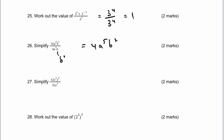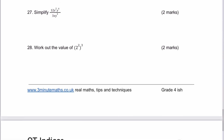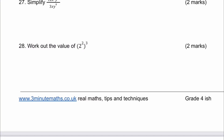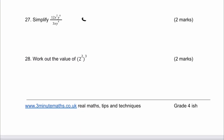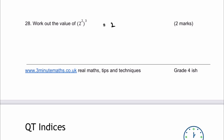Number 27: divide through by 3, so 12 divided by 3 equals 4. Then X to the 2 divided by X to the 1 is X. Y to the 6 divided by Y to the 4 is Y to the 2. Number 28: work out the value of 2 squared to the power of 3. That's exactly the same as 2 to the power of 6, because 2 times 3 is 6.